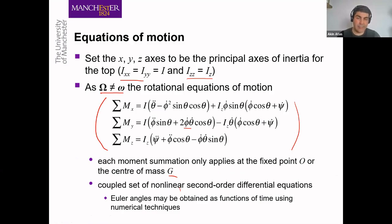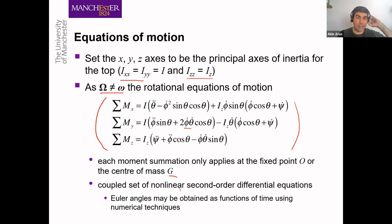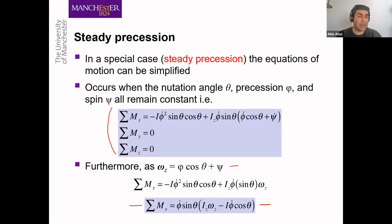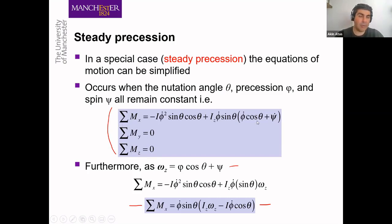These equations are a bit complicated and you need numerical techniques to identify Euler's angles as a function of time. In this lecture, we are going to simplify these equations further so we can get results by simple hand calculations. Steady precession helps us simplify the motion. When the nutation angle θ, precession ψ-dot, and spin φ-dot all remain constant, our equations become much more simplified. About the y and z axes we get zero, and only one equation remains — about the x-axis.